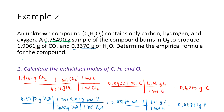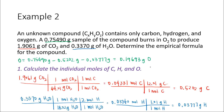To determine the mass of oxygen, we subtract the masses of carbon and hydrogen from the total mass of the unknown sample: 0.75490 minus 0.5202 minus 0.03777 equals 0.19693 grams of oxygen. Next, we convert the mass of oxygen to moles, because we need to know moles of each element to determine the empirical formula. Using 16 grams per mole of oxygen, that equals 0.01231 moles of oxygen.